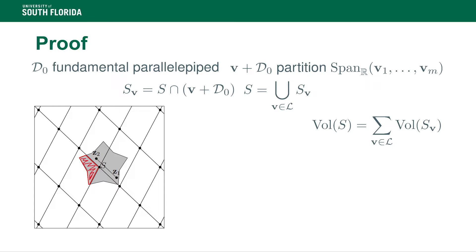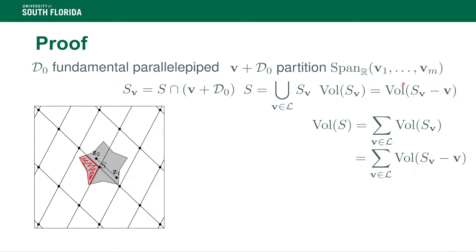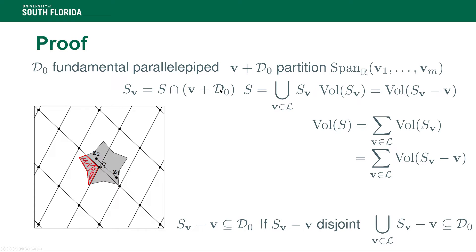The volume of S, because S is a disjoint union of the S_v's, is simply the sum of the volumes of the S_v's. The volume of an S_v equals the volume of S_v translated by any vector, because that just means I moved S_v to a different spot on the plane. So the volume of S is also the sum of the volumes of S_v minus v. Notice that S_v minus v belongs to D0, because S_v belongs to v plus D0, so if you subtract by v you fall back on D0.